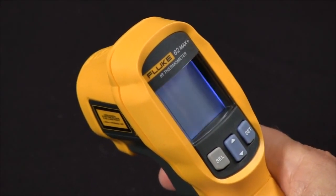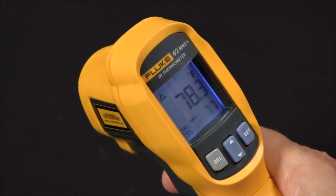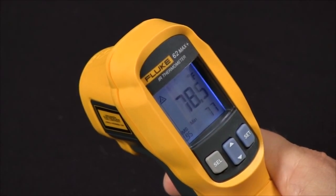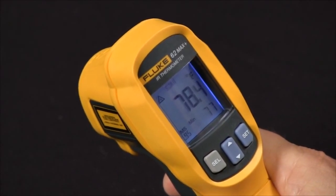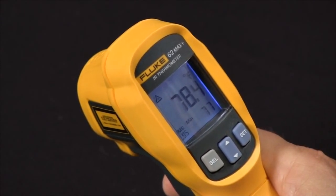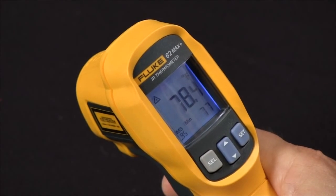The Fluke 62 Max and the 62 Max Plus are handheld IR thermometers. The 62 Max has a distance to spot ratio of 10 to 1 and the 62 Max Plus has a distance to spot ratio of 12 to 1.